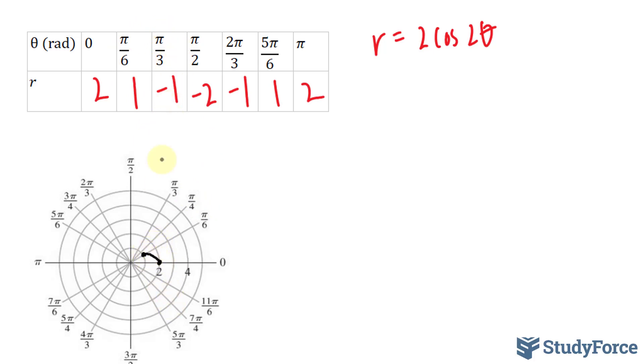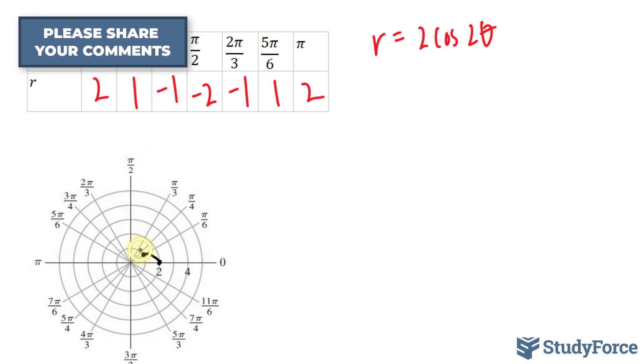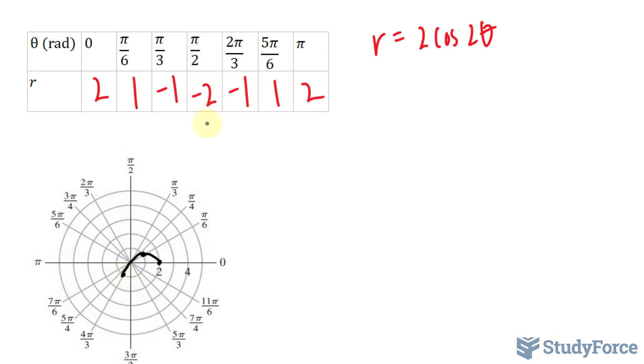Pi over 3 is negative 1. Now normally, if this were positive 1, it would be right here, but because it's negative, it's going to be in this direction. Pi over 2 and negative 2. Pi over 2 is right here. Negative 2 should be down here.